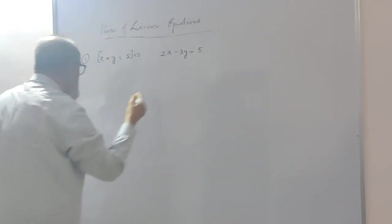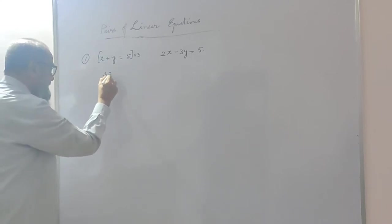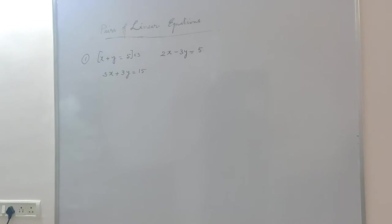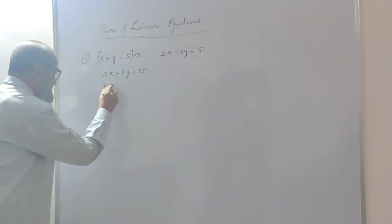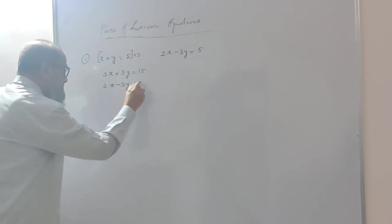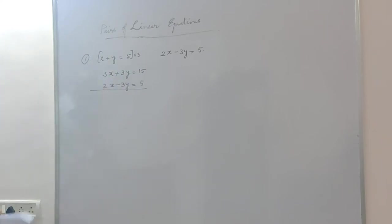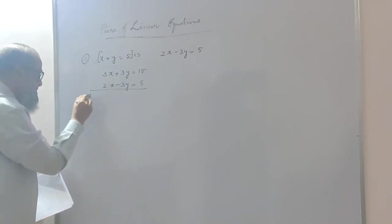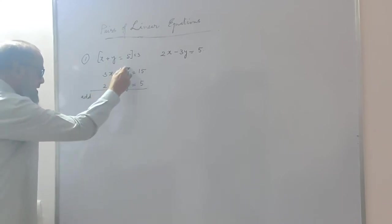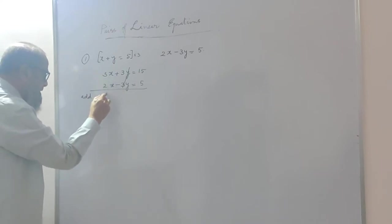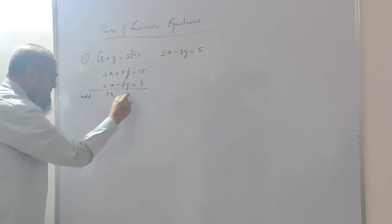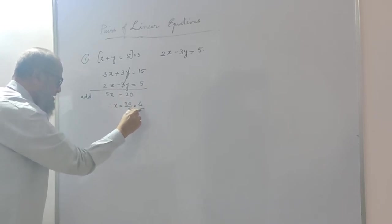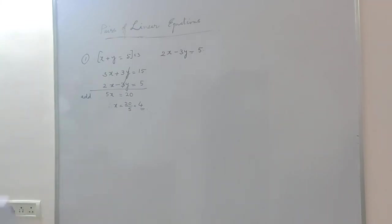If I multiply the first equation by 3, it becomes 3x plus 3y is equal to 15. All the terms are multiplied by 3. Then the second equation I will write as it is: 2x minus 3y is equal to 5. Now 3y and 3y are there — one is positive and the other is negative. So I can eliminate y by adding these two equations. Adding: 3x plus 2x becomes 5x, equal to 15 plus 5, that is 20. Therefore x is equal to 20 by 5. So I got the value of x as 4.